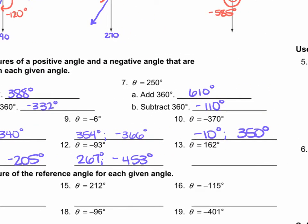For number 13, we have 162 degrees. We add 360 to get 522 degrees. Then we take 162 and subtract 360, giving us negative 198 degrees.